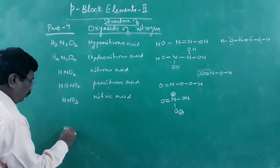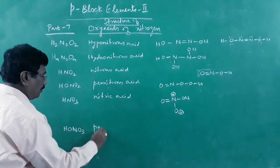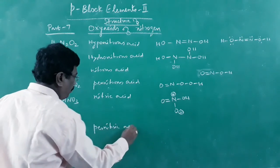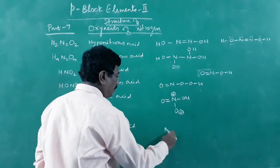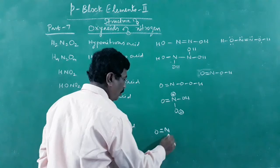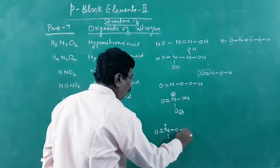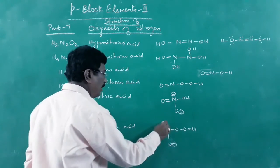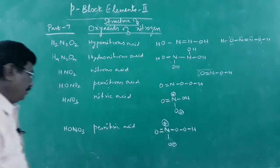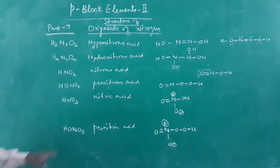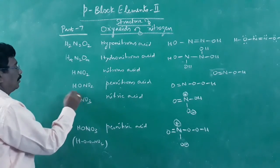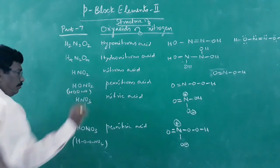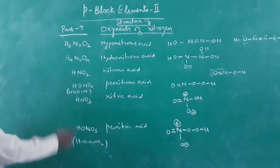Pernitric acid HONO3, or more exactly HOONO2: it is written as N with double bond O, single bond O, and then the peroxide O−O−H linkage. So pernitric acid is nitric acid with one extra oxygen in a peroxide linkage.